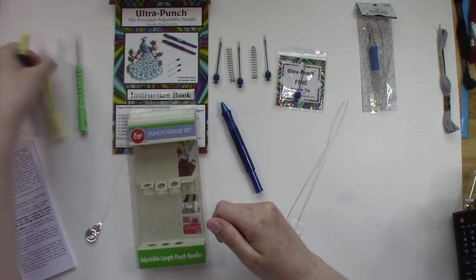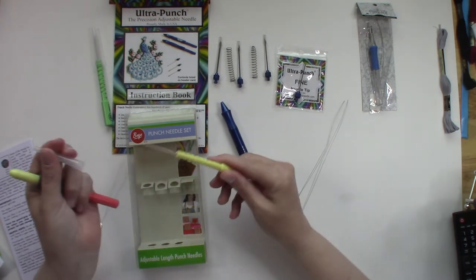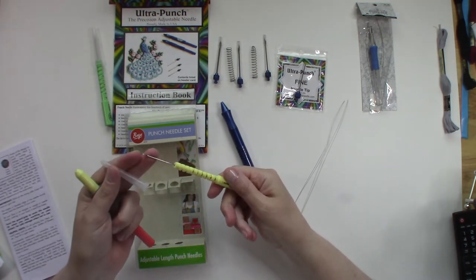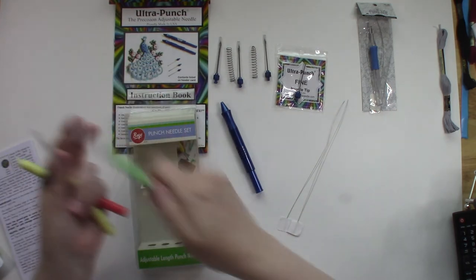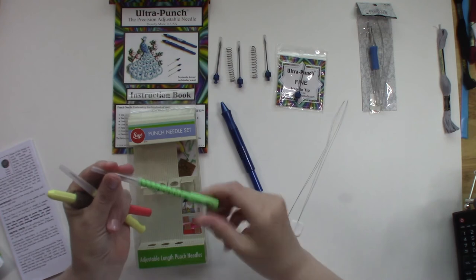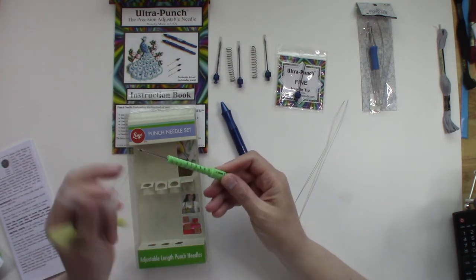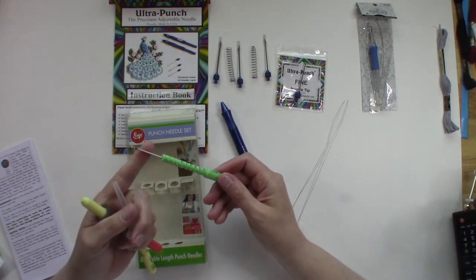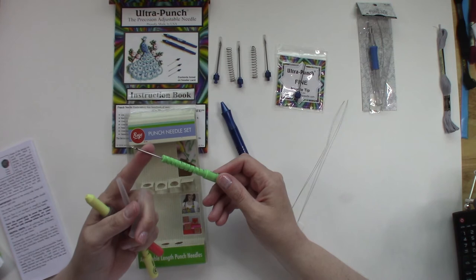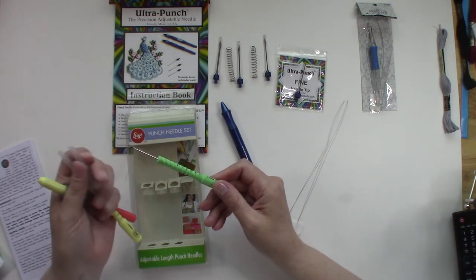You have a medium needle which is a 1.6, then you have a large needle which is a 2.2. I believe I used number 10 crochet thread through it and it worked just fine.